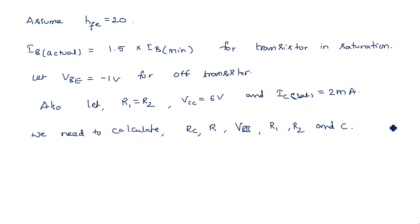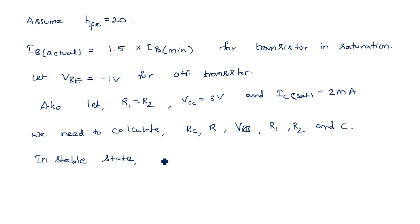In the stable state, Q2 is ON and Q1 is OFF. Always start a problem from the stable state, because that is the ultimate state — even after a triggering pulse is applied, the circuit returns to the stable state. So in the stable state, Q1 is OFF and Q2 is ON.